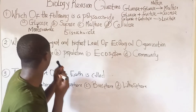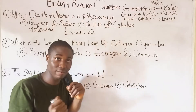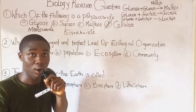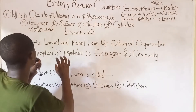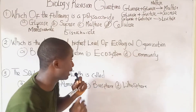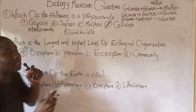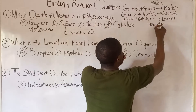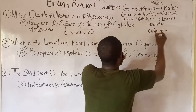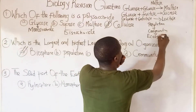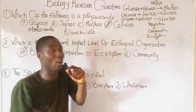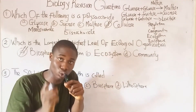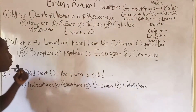Question two asks: which is the largest and highest level of ecological organization? The correct answer is the biosphere. The trend goes: population forms the community, community forms the ecosystem, and the ecosystem leads to the highest level — the biosphere — which is the zone where life exists.